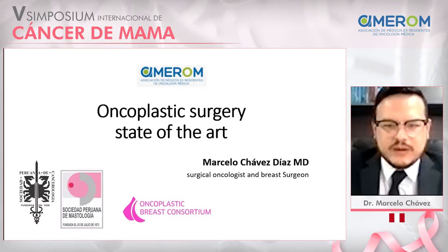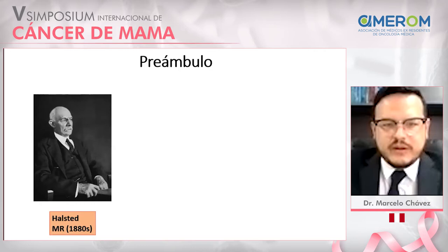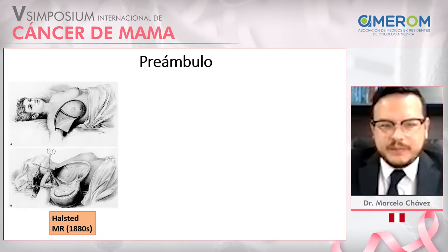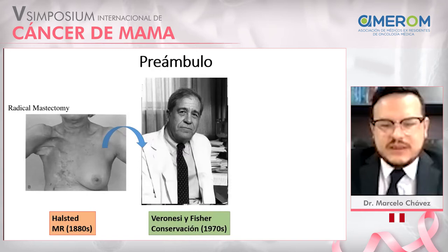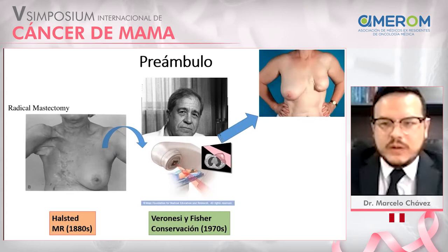First of all, we are going to talk about the evolution of surgery. We have Halstead in 1898 who created radical mastectomy to treat breast cancer. Then in 1970, Veronesi and Fisher described conservation surgery as a model to treat breast cancer with similar overall survival. However, this creates some deformation and asymmetry in the breast. This is why oncoplastic surgery was developed.